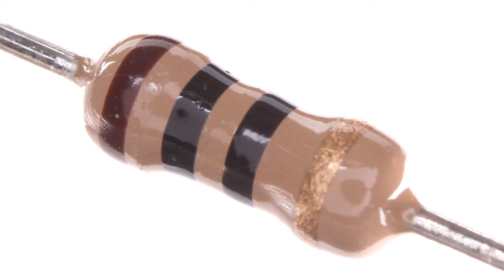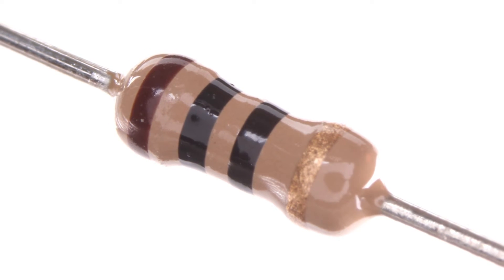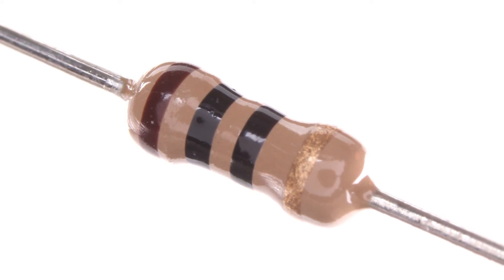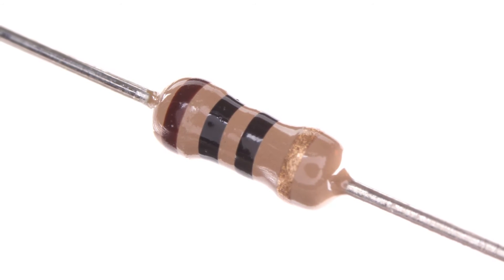A resistor is an electronic component that basically allows us to limit how much current is flowing through the circuit at any given time. But the current that's flowing is also based on the voltages present. So now we have to get into some math.